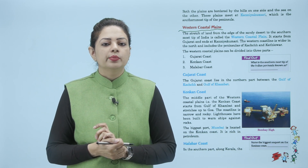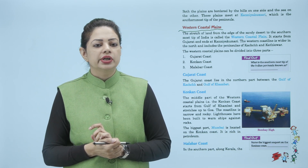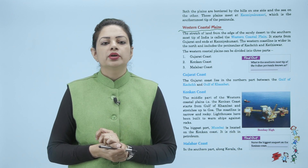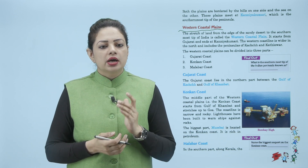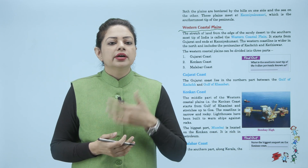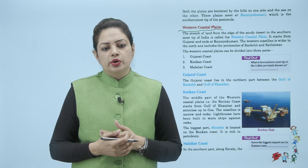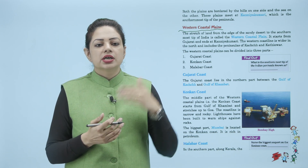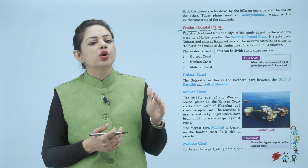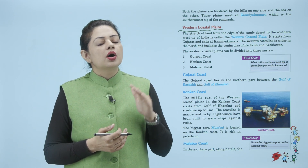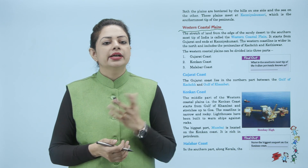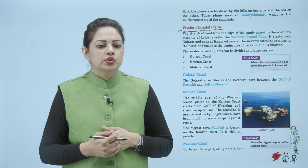The western coastal plain can be divided into three parts: Gujarat coast, Konkan coast, and third is Malabar coast. Gujarat coast jahaan se start hote hain, fir middle mein Konkan coast, aur last jahaan Kanyakumari mein khatam hote hain western coastal plain, that is Malabar coast.